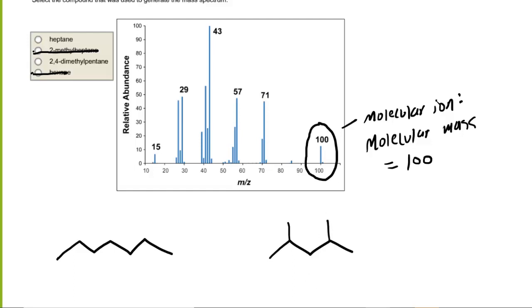Now, it turns out that the telltale signal that will help us distinguish between these two molecules is going to be right here at 71. But let's take a look at why. So what we'll do is we'll fragment each molecule at a specific location, and we'll see if we can generate a fragment whose mass is 71 atomic mass units.